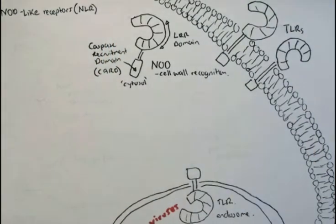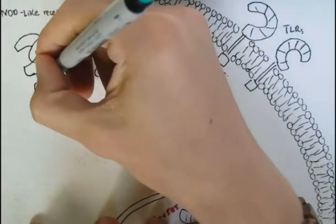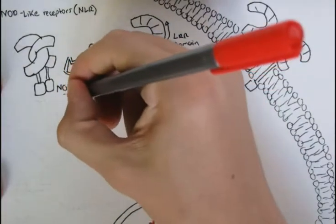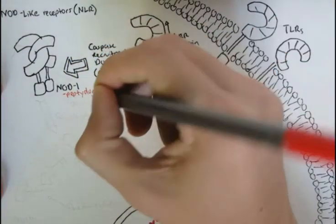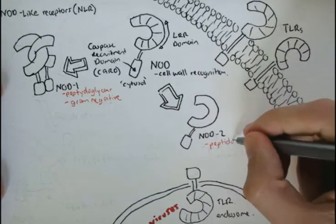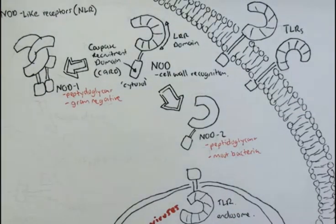There are two main types of NLRs: NOD1 and NOD2. NOD1 binds to PAMPs peptidoglycans, usually on gram-negative bacteria. Peptidoglycans are a cell wall component. Whereas NOD2 also binds to peptidoglycans, but on most bacteria.